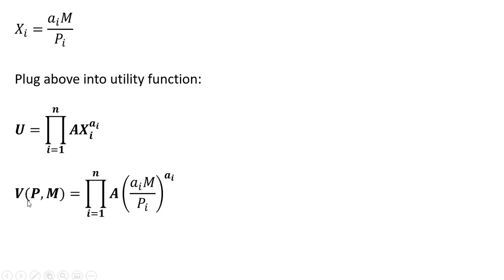So here's our indirect utility function. It's a function of prices and money income. So after making a substitution, we get this result.